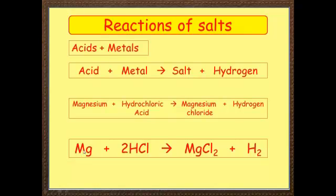And here is the equation: Mg, magnesium, plus hydrochloric acid, HCl, gives MgCl2, magnesium chloride, plus hydrogen.